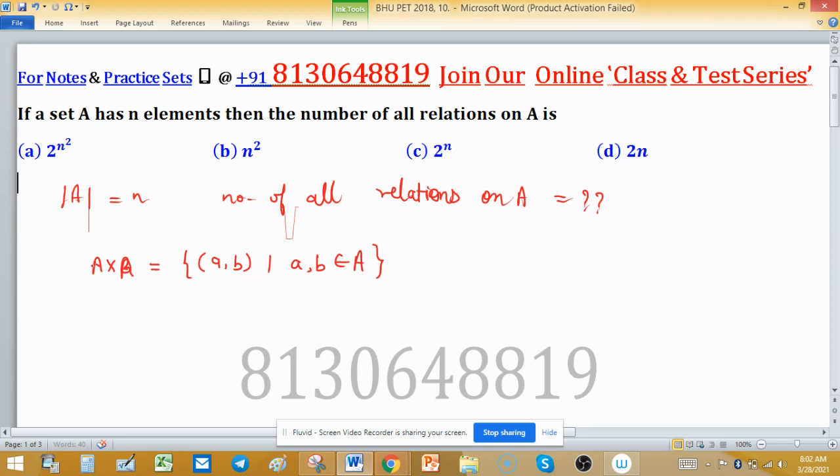So we have to find cardinality of this set. Means cardinality of A cross A is equal to cardinality of A into cardinality of A. And we know that cardinality of A is N into N.